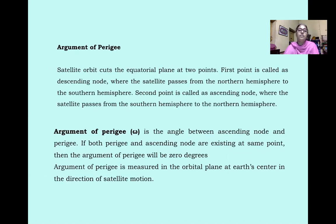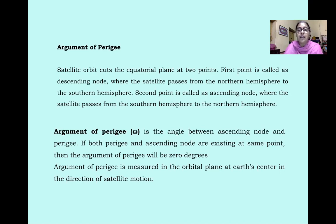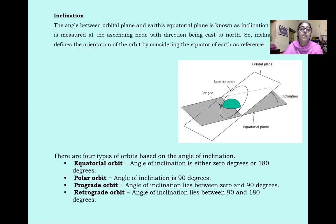Argument of Perigee: The satellite orbit cuts the equatorial plane at two points. The first point, where the satellite moves from the northern hemisphere to the southern hemisphere, is known as the descending node. The second point, where the satellite passes from the southern hemisphere to the northern hemisphere, is the ascending node. The argument of perigee (ω) is the angle between the ascending node and perigee, measured in the orbital plane at the earth's center in the direction of satellite motion. If both perigee and ascending node exist at the same point, the argument of perigee is 0°.